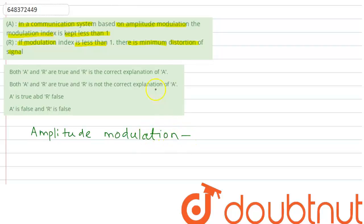So what happens here? In this case, amplitude of carrier wave, amplitude of the carrier wave, this gets modified.